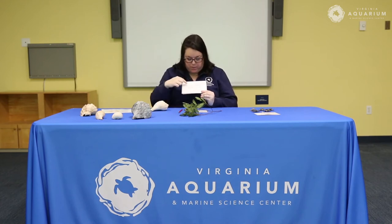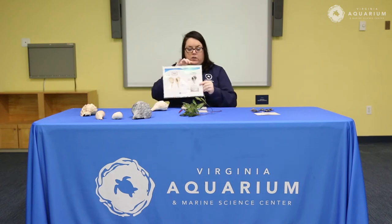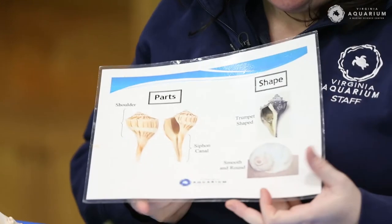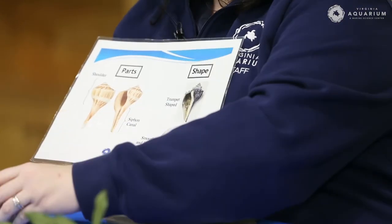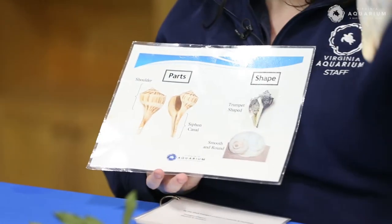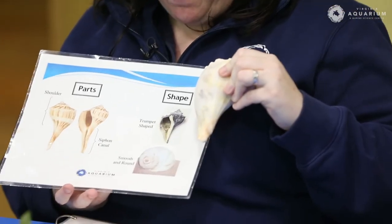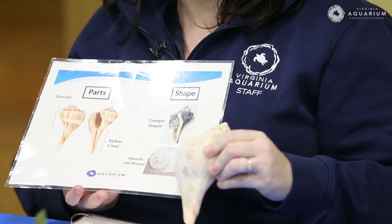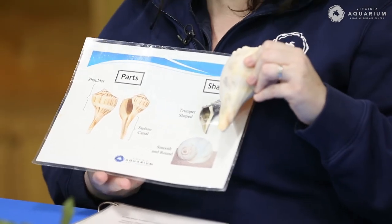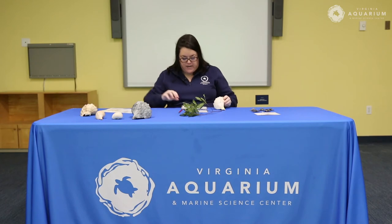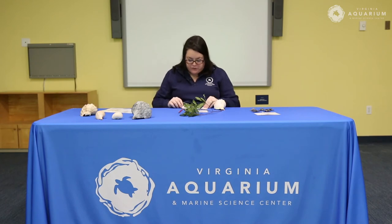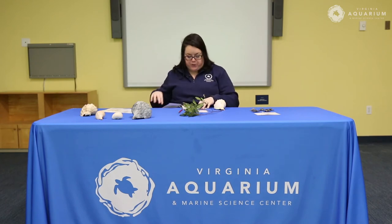The first question is: is the shell trumpet shaped or smooth and rounded? Looking at our cheat sheet, here are the two shapes — trumpet shaped or smooth and round. Which one do you think it is? It looks pretty trumpet shaped to me. So let's see where that takes us on our key — if it's trumpet shaped, it says go to page two.